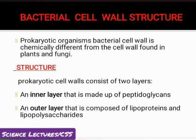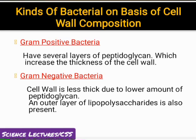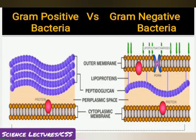اب ہم prokaryotic organism bacteria کے cell wall structure پر بات کریں گے جو کہ plant اور fungi کے cell wall سے بالکل different ہے۔ Prokaryotic cell wall میں two prominent layers ہیں: inner layer peptidoglycan کی بنی ہے اور outer layer lipoproteins اور lipopolysaccharide کی بنی ہے۔ Bacteria کے اندر ان کی cell wall chemical composition vary کرتی ہے جس کی وجہ سے انہیں two groups میں classify کیا گیا ہے: gram positive and gram negative bacteria۔ Gram positive bacteria میں peptidoglycan ایک thick layer بناتا ہے جبکہ gram negative bacteria میں thin layer of peptidoglycan اور additional layer of polysaccharide ہے، جو کہ اس diagram میں بہت clear ہے۔